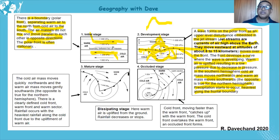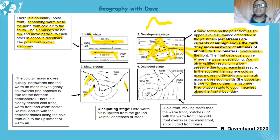Then we reach the mature stage. You can see the wave and two distinct fronts clearly separated. There's a northward and eastward movement due to the jet stream disturbance. We have two clear, distinct fronts — cold front and warm front — and that's how you identify the mature stage.